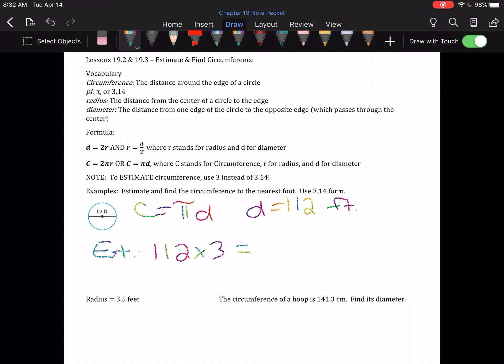I'm going to do the diameter times 3. And yes, you are allowed to use a calculator. 112 times 3 is 336 feet.